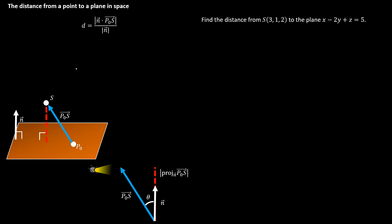So let's give it a shot. We know that we can calculate the distance by creating a vector from a point in the plane out to the point s in space. Then using the normal vector from the plane, we dot those two vectors together, take the absolute value, and divide that by the magnitude of the normal vector.